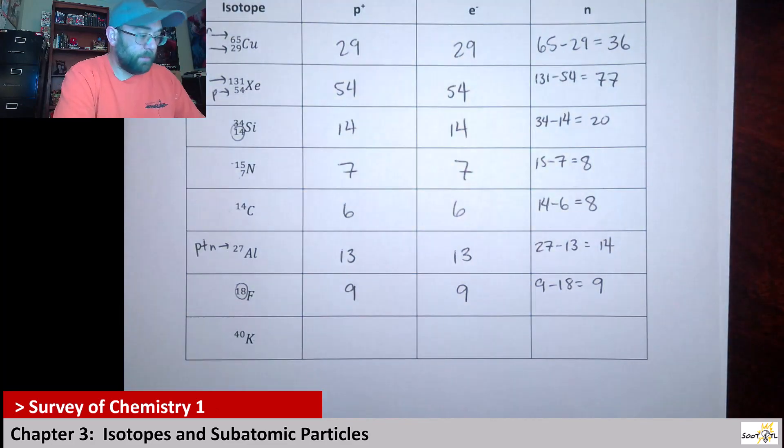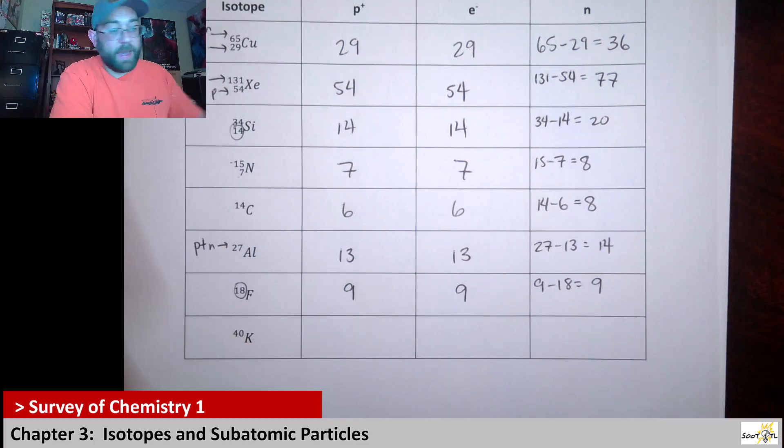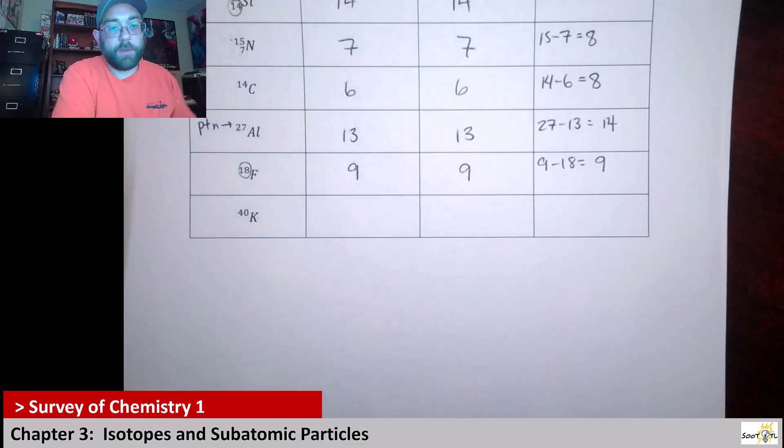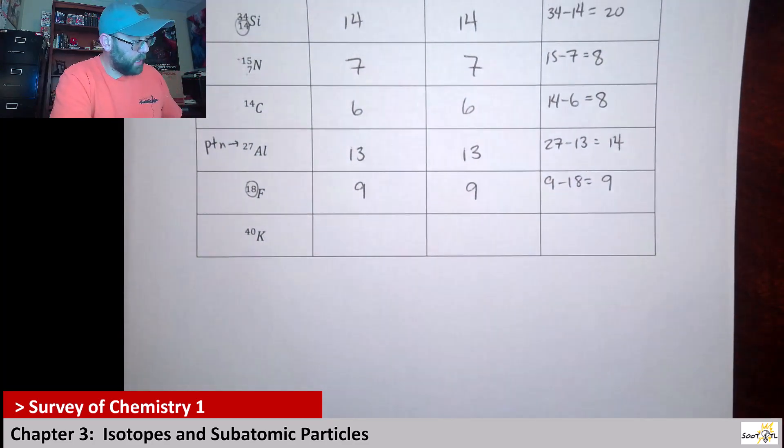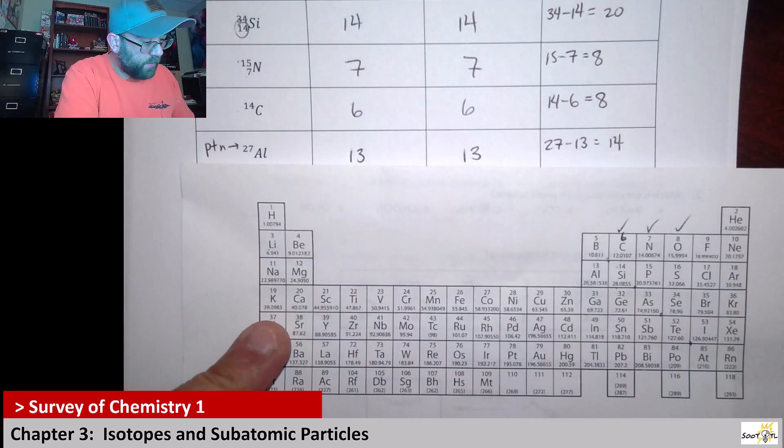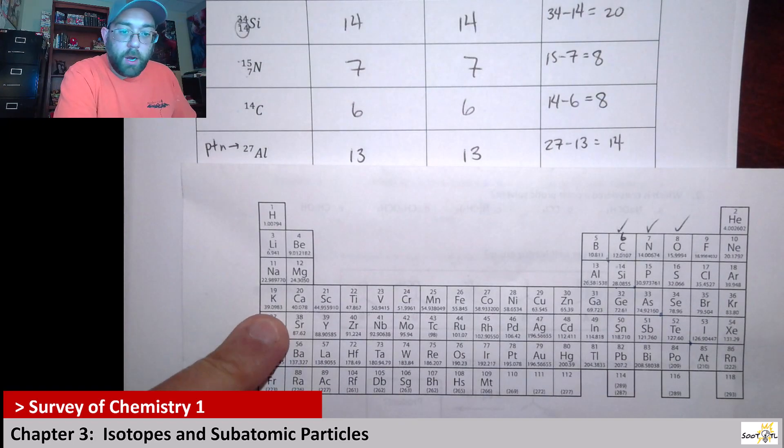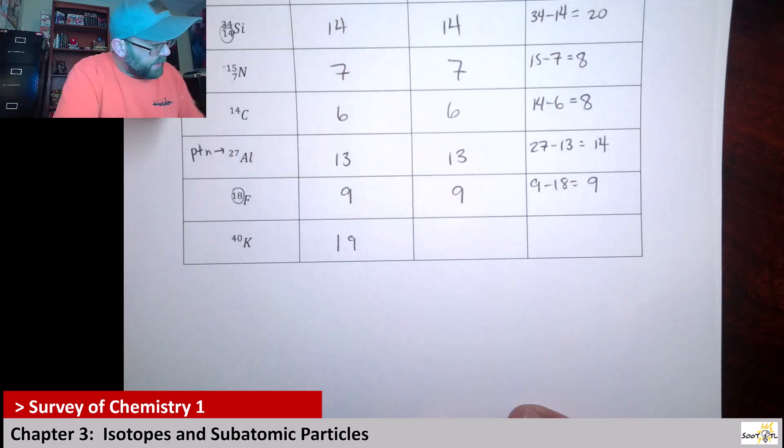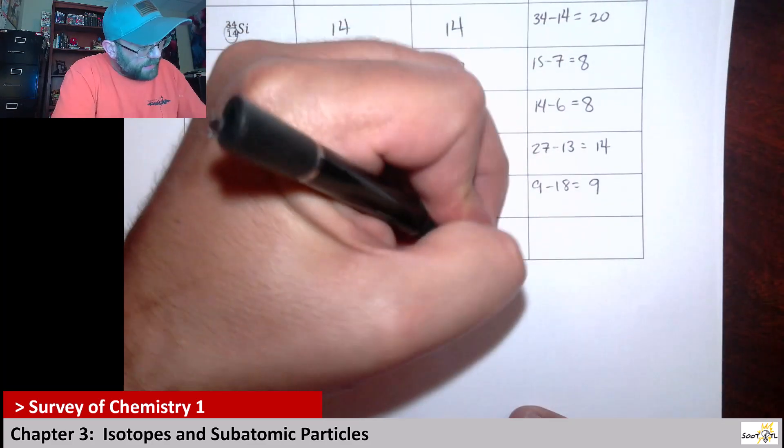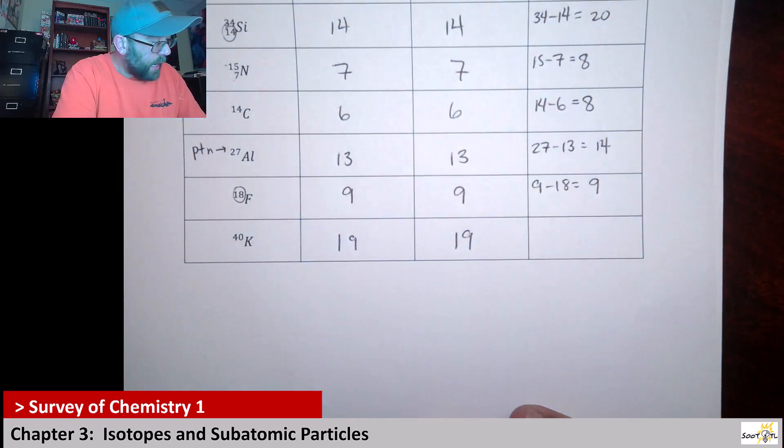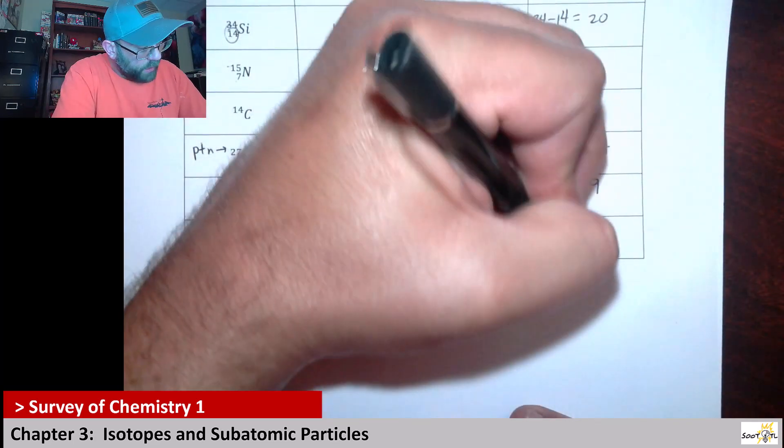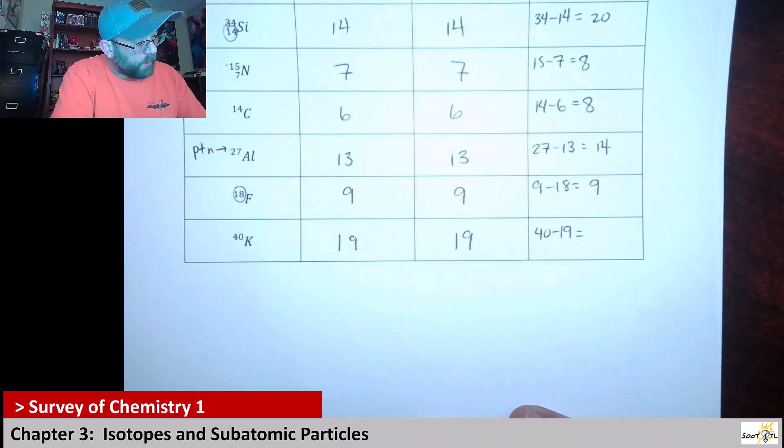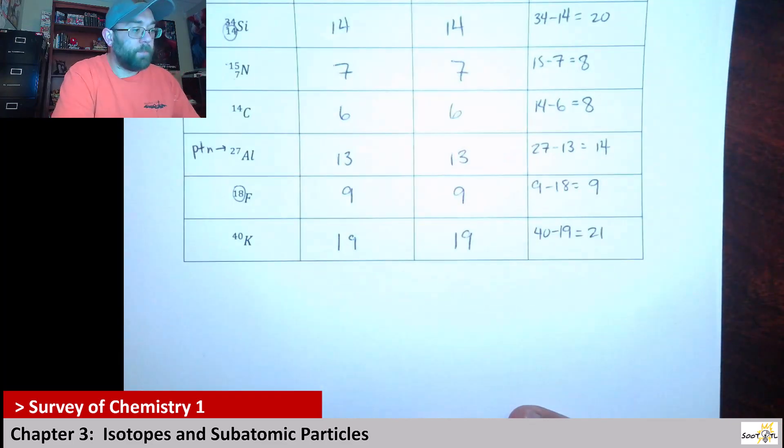And then lastly we have K, which is potassium, not krypton. You need to know the first 36 elements. So potassium has 19 protons. It's neutral, so that means it has 19 electrons. And to get the number of neutrons, we would say 40 minus 19, that would give us 21.